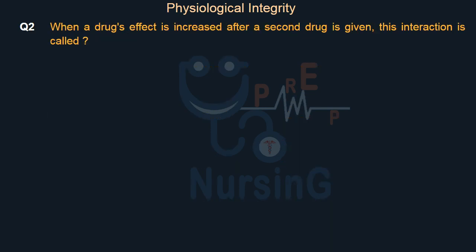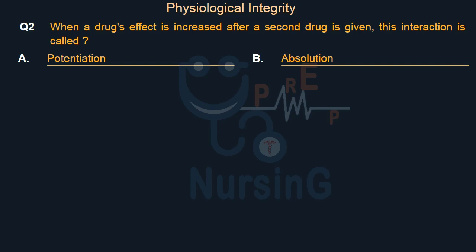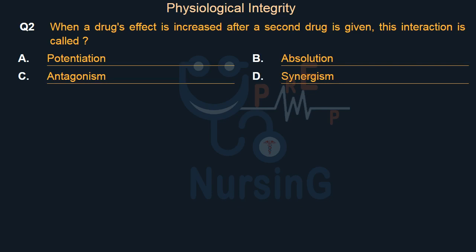When a drug's effect is increased after a second drug is given, this interaction is called: Option A: Potentiation. Option B: Absolution. Option C: Antagonism. Option D: Synergism.